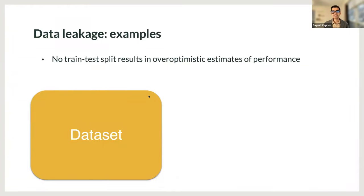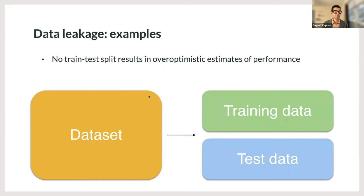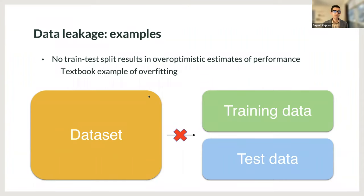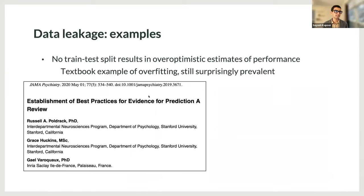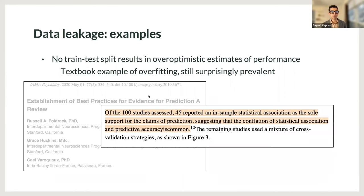Perhaps the simplest example of leakage is when there is no training and test set split when evaluating the model. In machine learning, splitting the dataset into a training set and an evaluation set is one of the most fundamental aspects. Not splitting the dataset like this is a textbook example of overfitting — your model's estimates will be overoptimistic. It might seem that such a simple error would be rare in published research. But a 2020 paper on neuropsychology found that out of 100 studies assessed, 45 did not have a train-test split.